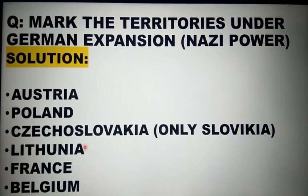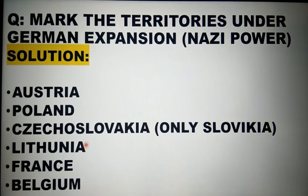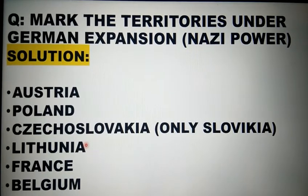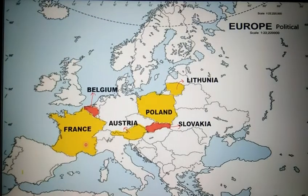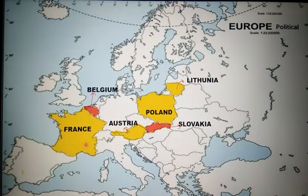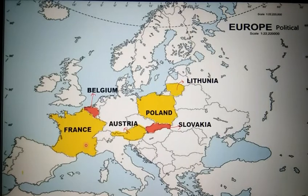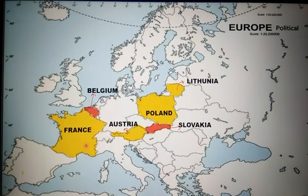For this map activity you need to be taking out the Europe's political map. We'll mark which territory is the German territory, which is the Nazi power.